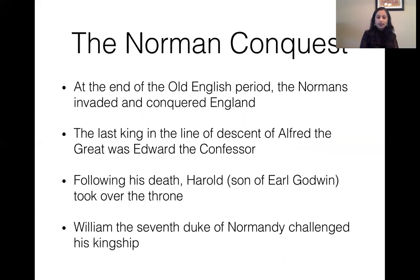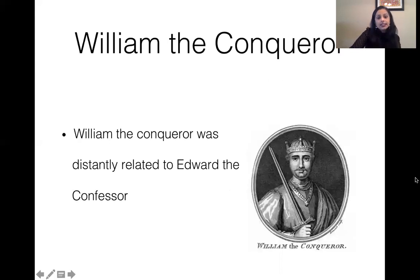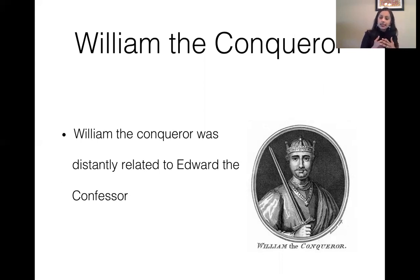Remember that we talked about Alfred the Great in the Old English era. In the line of descent of Alfred the Great, the last king when the Norman Conquest happened was Edward the Confessor. He died, and following his death Harold, who was a son of Earl Godwin, took over the throne. Now William, the seventh Duke of Normandy, challenged Harold's kingship because he was distantly related to Edward the Confessor. He claimed he had legitimate reason to be the king of England, and that's why the Norman Conquest happened.